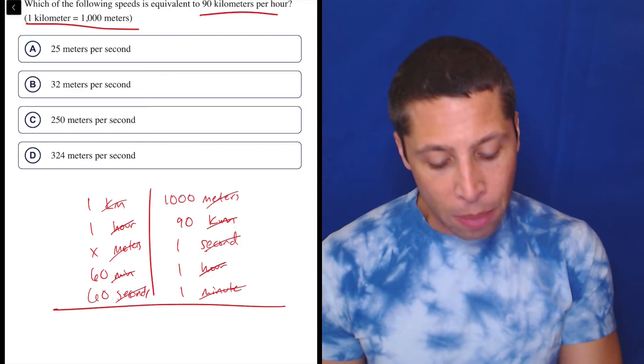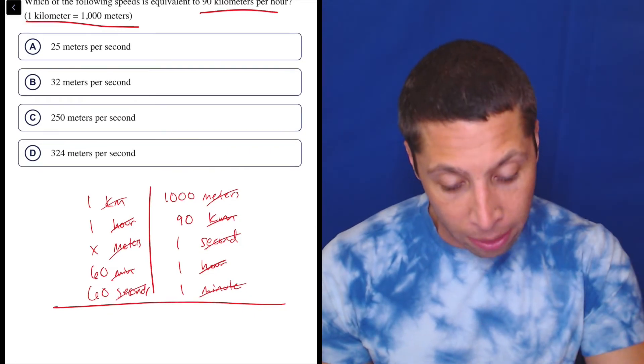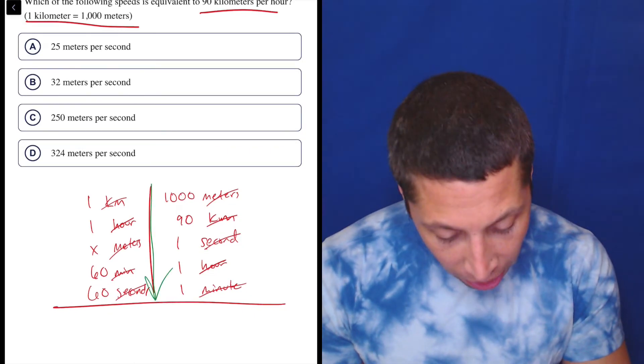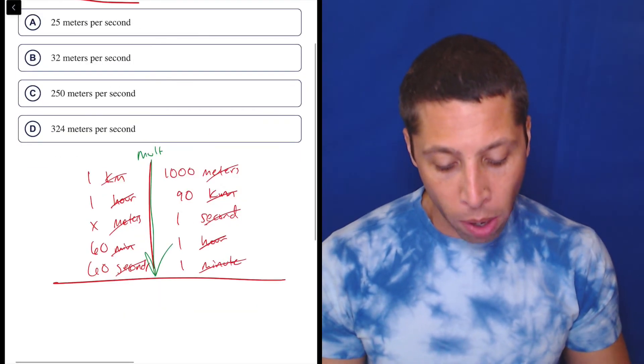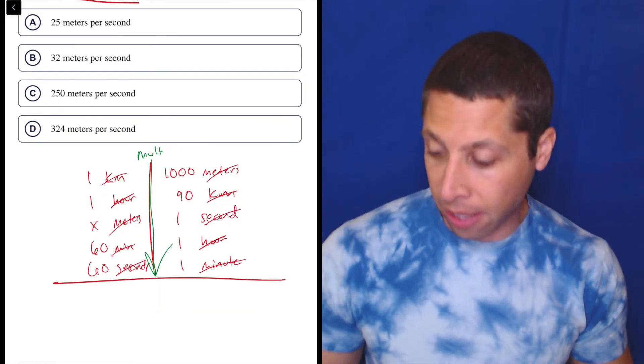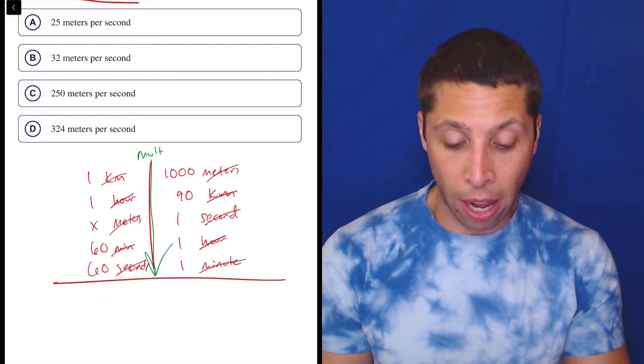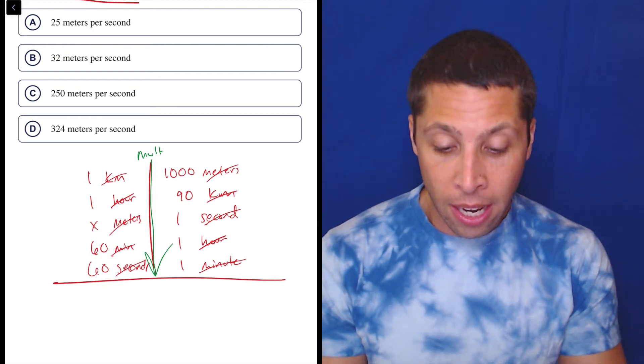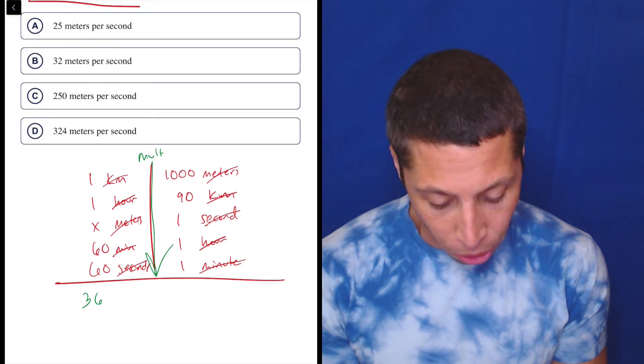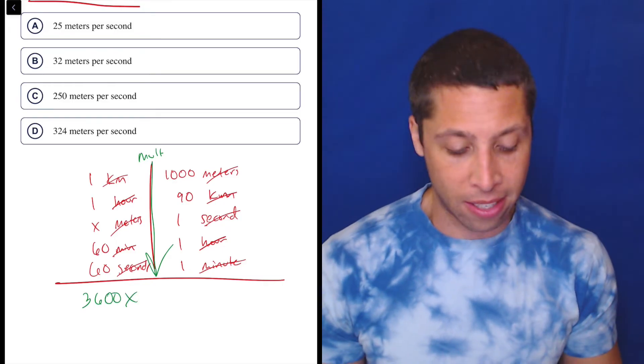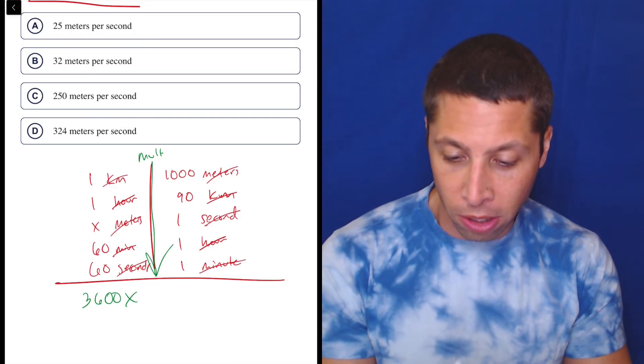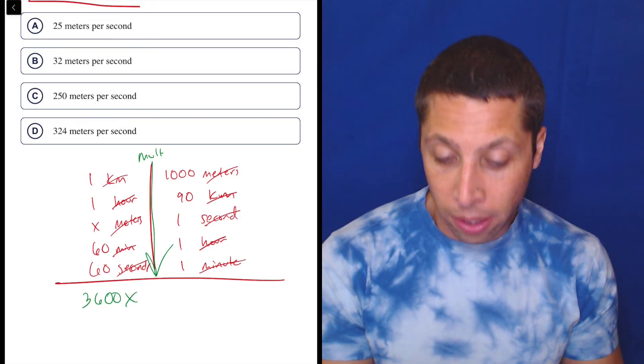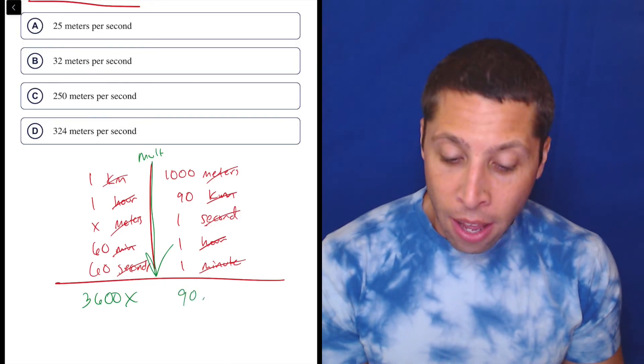Now we just go and we multiply down the columns, right? So we're basically going down each side and we're going to multiply each thing. So on the left side, we have 1 times 1 times x times 60 times 60. I could just use a regular calculator for that. 60 times 60 is 3,600. So 3,600x is this column. And then on the right side, we have a thousand times 90. Just make sure you don't lose any zeros. So I'm going to use the calculator for that as well. So that's going to be 90,000.